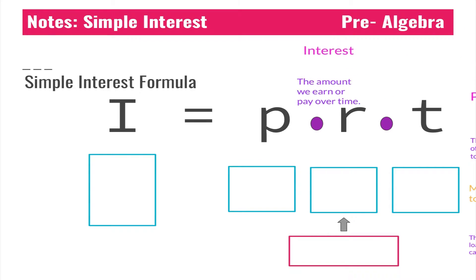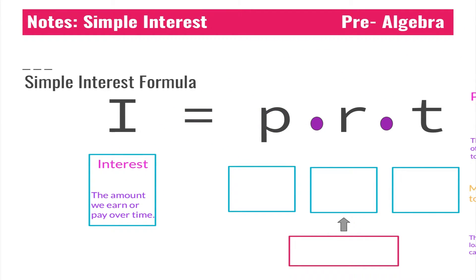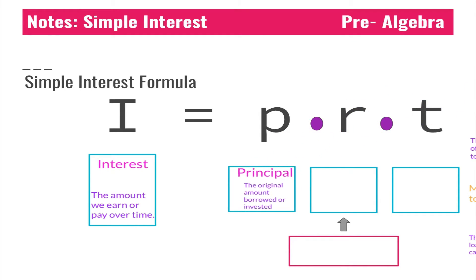I stands for interest. There are two kinds of interest: the amount of money that we earn or the amount of money that we pay over time. To figure that out we have to have an amount of money we start with, which we call the principal. The principal is the amount of money that we borrow or the amount that we invest.